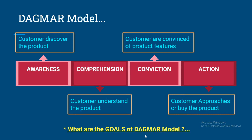To understand DAGMAR better, we need to learn about its two goals. The first is to develop a communication task — in the form of text, videos, or personal interaction — that will help the consumer sail through the four steps and take them to the decision of buying the product. The second goal is to ensure that success, in the form of increased sales or revenues, can be measured against a baseline.